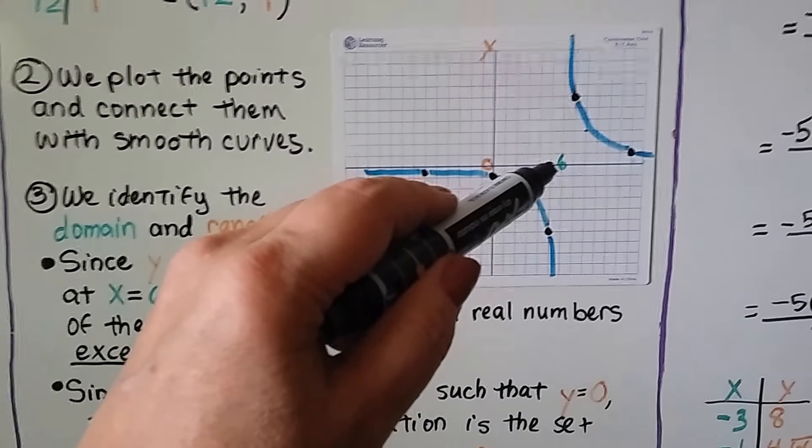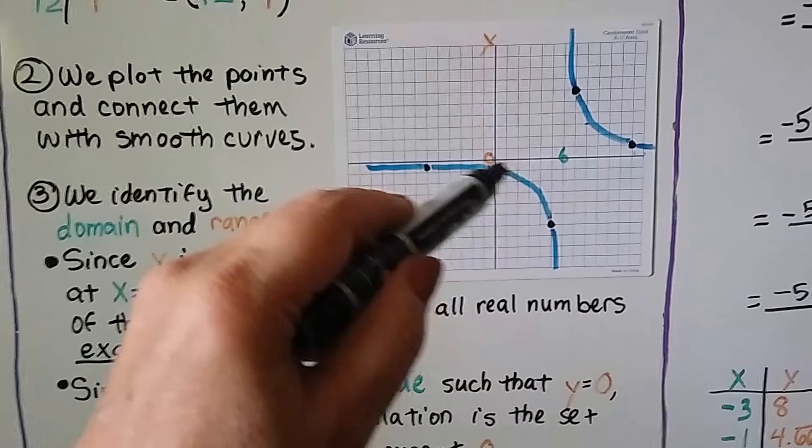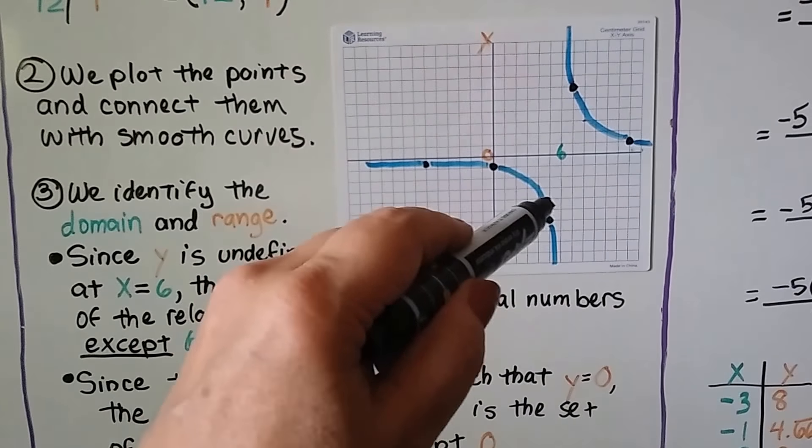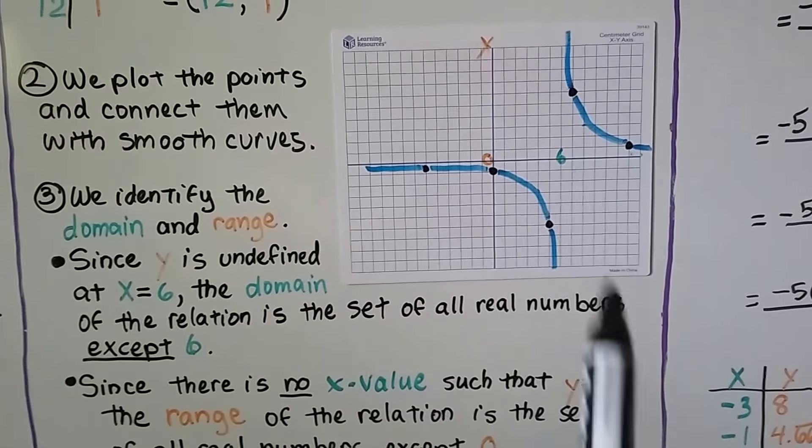So if you look at this line, this is where x is 6. It approaches where x is 6, but it never touches. It gets close. And look it up here.